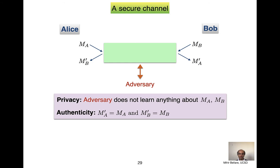What is a secure channel? You have Alice and Bob, who are the legitimate parties who want to communicate. Perhaps they do this through email, through messaging, or perhaps one is a client and one is a server — like accessing your Gmail account. Alice will want to send across a message, call it M_A. It goes across some medium, but we imagine the adversary is present there — it can see things and perhaps even modify things. At the other end, Bob will receive something, call it M'_A.